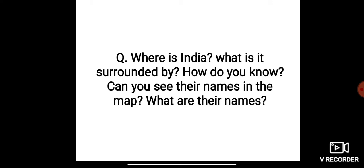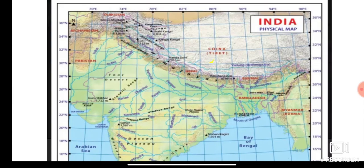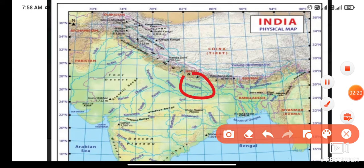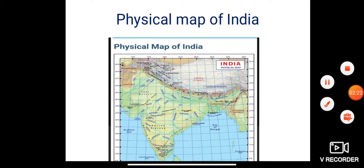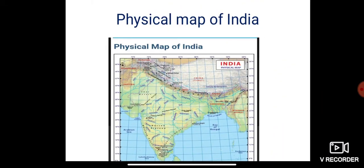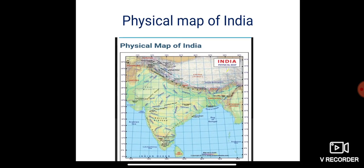Where is India, and what is it surrounded by? How do you know? Can you see the names in the map? What are their names, and how is India surrounded? As you can see from the given map itself, India is surrounded by seas and ocean.